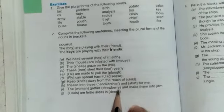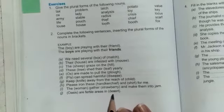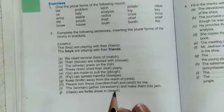The women, W-O-M-E-N, is its plural form, gather strawberries. Y will replace with I-E-S and make them into jam. Oasis is fertile in deserts. So this is the second exercise.